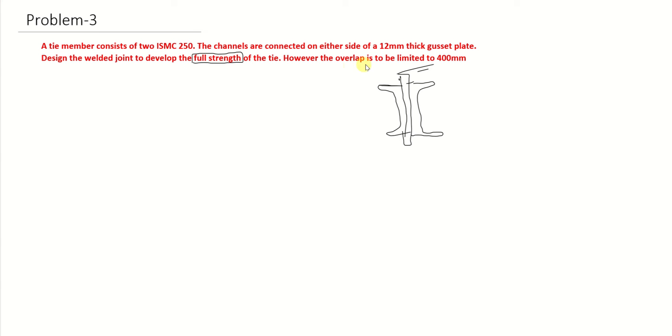However, the overlap is to be limited to 400mm. Now we have to assume the missing data - the grade of steel. Let us assume FE 410, E250. Table number 1 of IS 800 gives the values: ultimate strength would be 410 N/mm² and yield strength FY is 250 N/mm².